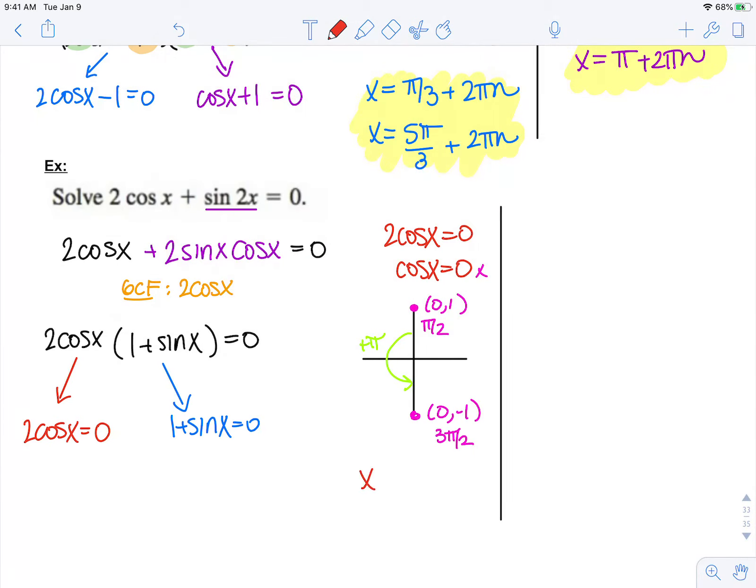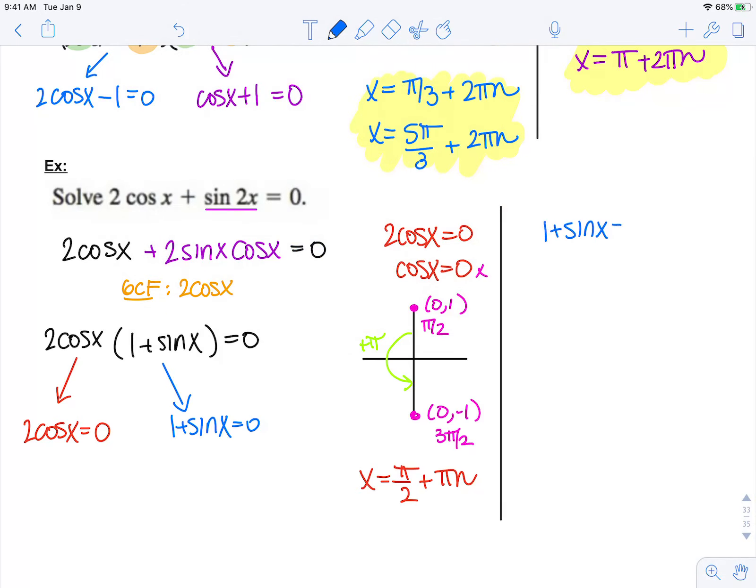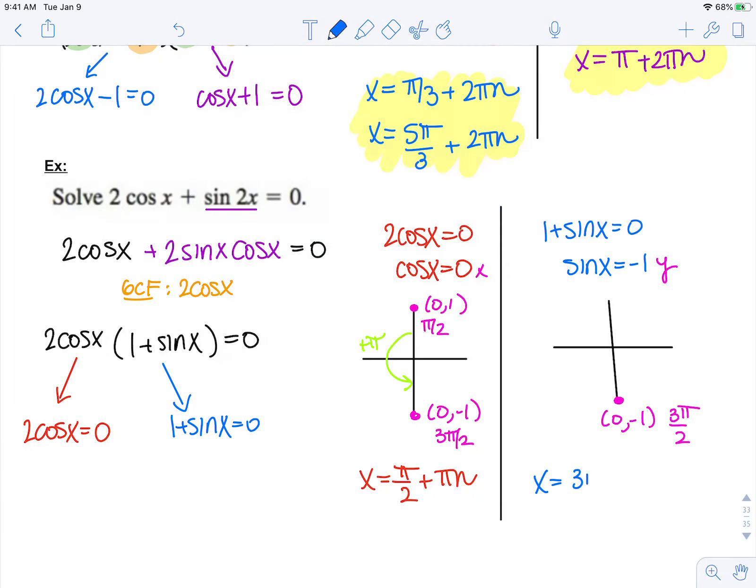So 1 plus sine x equals 0, so sine x equals negative 1. Remember in our unit circle, sine is y, so we have to think about where is y negative 1. That only happens down here at (0, negative 1) which is 3 pi over 2. So this general solution is x equals 3 pi over 2 plus 2 pi n.